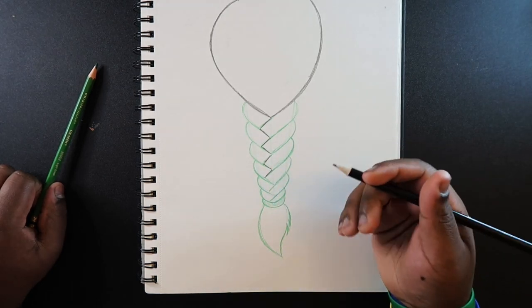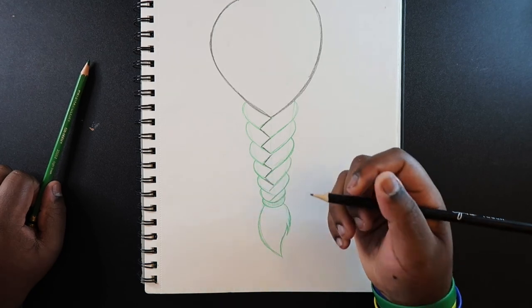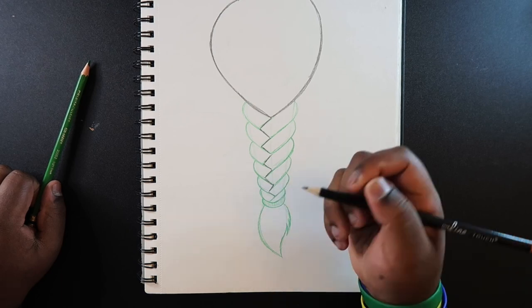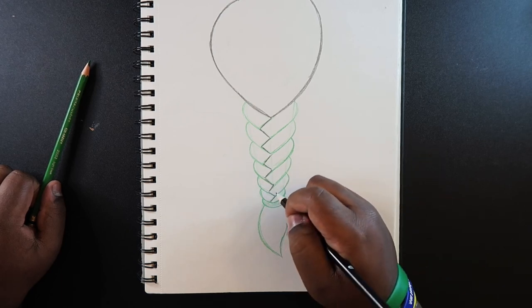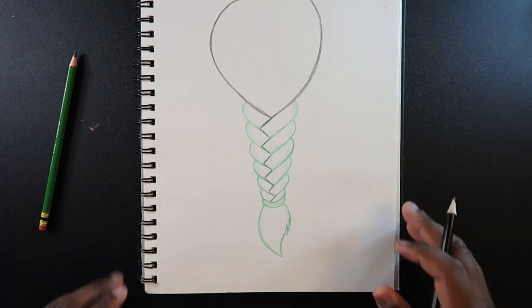It kind of proves my point from earlier that I don't want to start off with the zigzags and make those perfect and then end up messing these strands up in the end. It's best to start off with the strands first and then go and mess around with the zigzags. So yeah, that's how you draw braids.